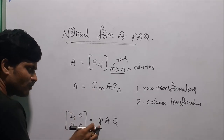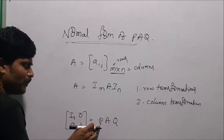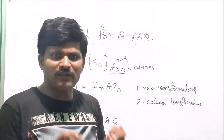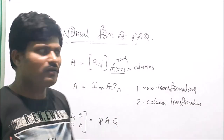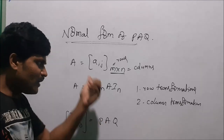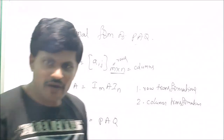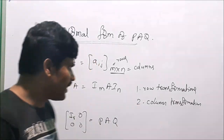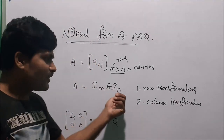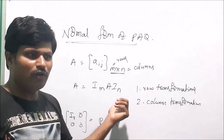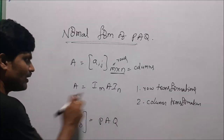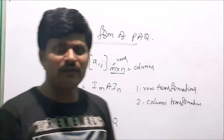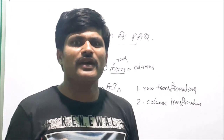After applying row transformations, Im can be reduced to the non-singular matrix P. In Im, the principal diagonal elements are 1s and remaining elements are 0s, but in P these are converted to some non-zero elements, either 0, 1, or any non-zero elements. Similarly, the same procedure applies for the post-factor matrix to obtain Q. This is the normal form of PAQ and the procedure for obtaining it.